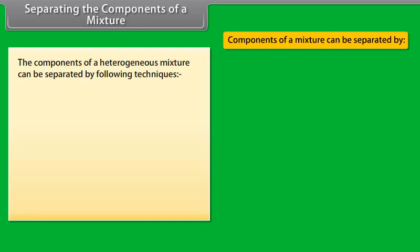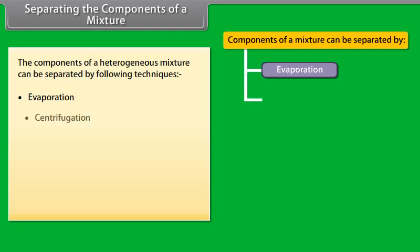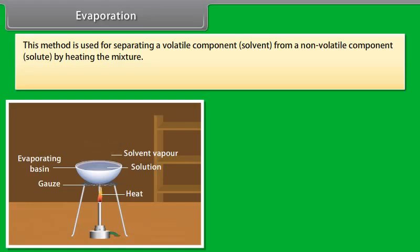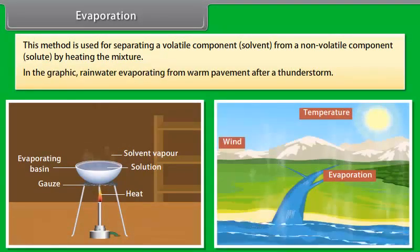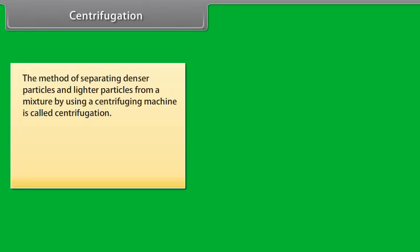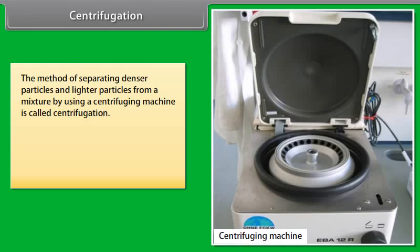Separating the components of a mixture. The components of a heterogeneous mixture can be separated by the following techniques: evaporation, centrifugation, decantation, sublimation, chromatography, distillation, and fractional distillation. Evaporation is used for separating a volatile component (solvent) from a non-volatile component (solute) by heating the mixture — for example, rainwater evaporating from warm pavement after a thunderstorm. Centrifugation is the method of separating denser particles from lighter particles using a centrifuging machine — for example, spinning milk to separate cream, since cream is less dense than milk.